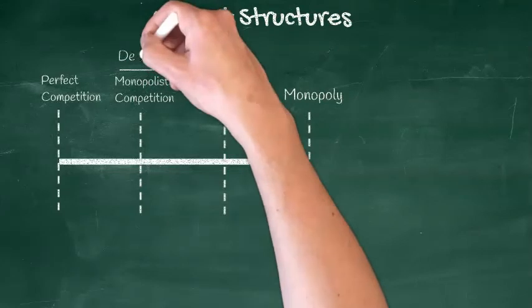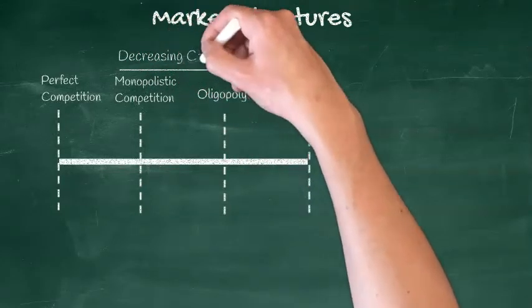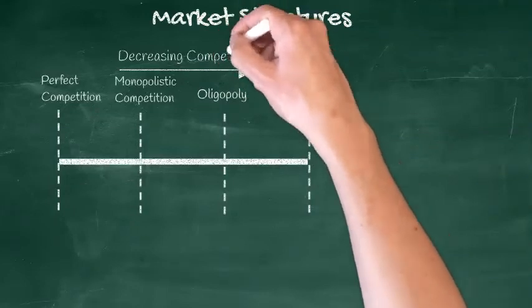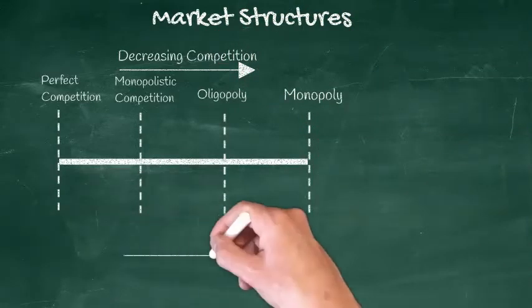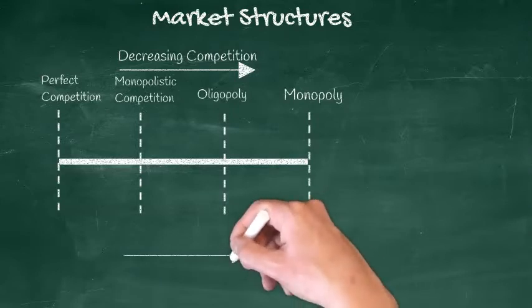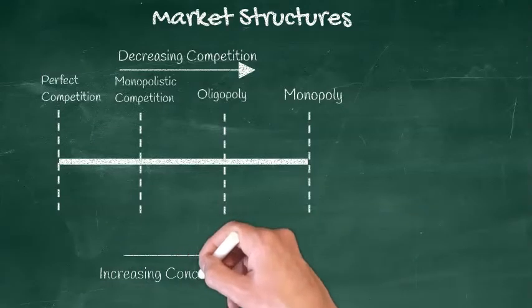As we move along this spectrum, the degree of price competition will fall and prices will deviate significantly from marginal cost. At the same time, the degree of market concentration will also increase.